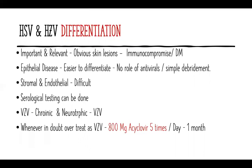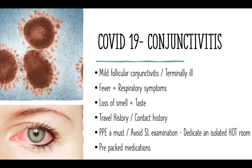How do you differentiate HSV from HZV, and should you? If there are skin lesions, it's easy. Always remember HSV is associated more with immunosuppression and diabetics. Epithelial disease is easier to differentiate — in HZV, simple debridement will do with no role for antivirals. Stromal and endothelial disease is difficult to differentiate; serological tests can be done. If the case has a more chronic nature with some neurotrophic element, it is more likely varicella zoster. When in doubt, always err towards varicella zoster and give the therapeutic dosage: 800 mg acyclovir five times a day for at least one month.